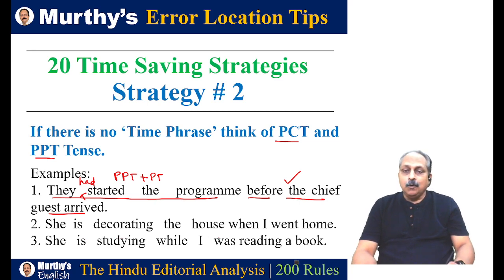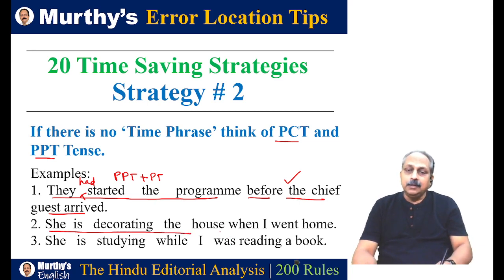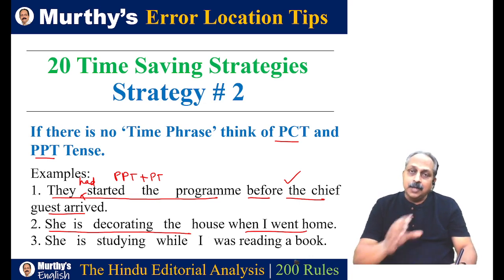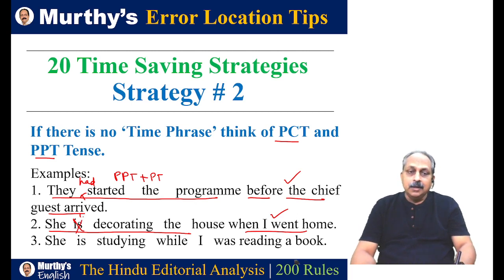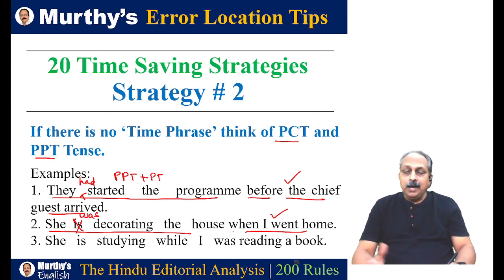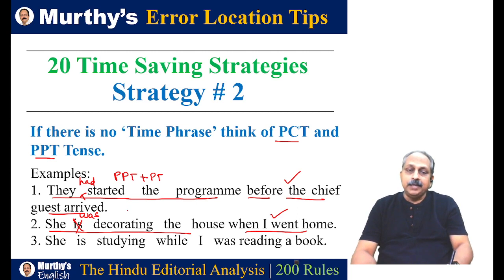'She is decorating the house when I went home.' Here there are two actions. Something was going on when something else happened in the past. For what happened in the past, we use past tense — 'I went home,' no error. But for something that was going on at that time, we should use past continuous. 'She is decorating' is present continuous — not correct. We have to say: 'She was decorating the house when I went home.' This is a combination of past continuous plus past tense.